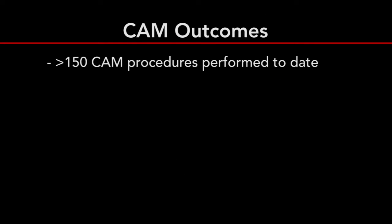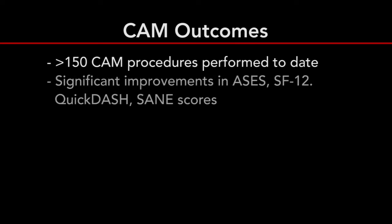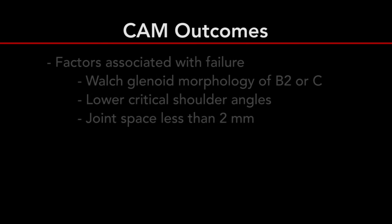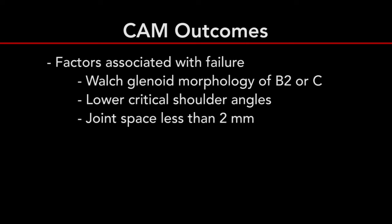To date, over 150 CAM procedures have been performed at our institution. Significant improvements have been noted in the ASES, SF-12, QuickDASH, and SANE scores. Fifteen shoulders have progressed to total shoulder arthroplasty at a mean of two years post-operatively. Factors associated with failure include a Walch glenoid morphology of B2 or C, lower critical shoulder angles, and a joint space less than two millimeters.